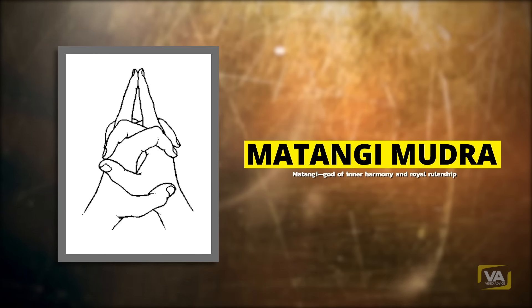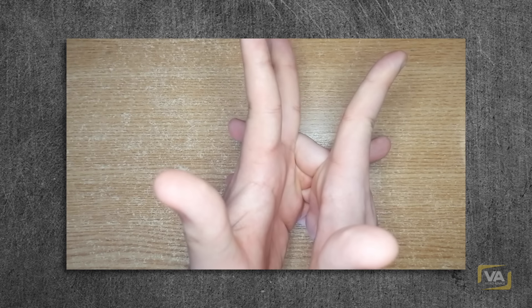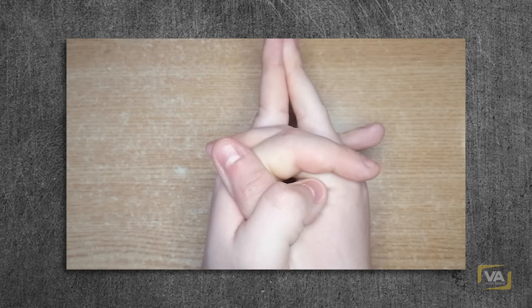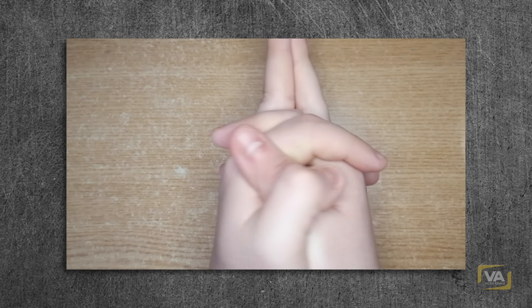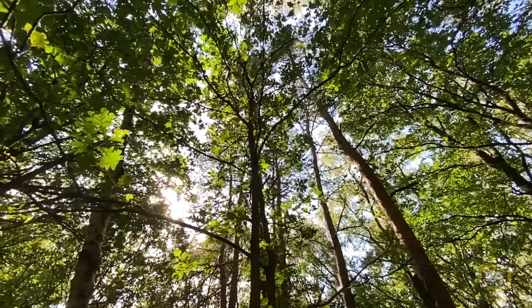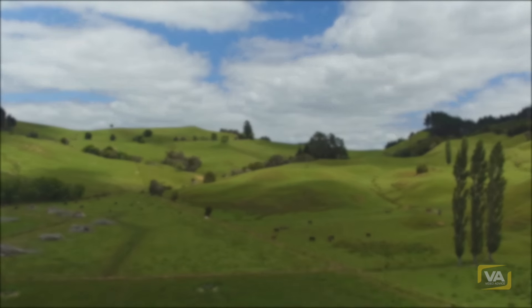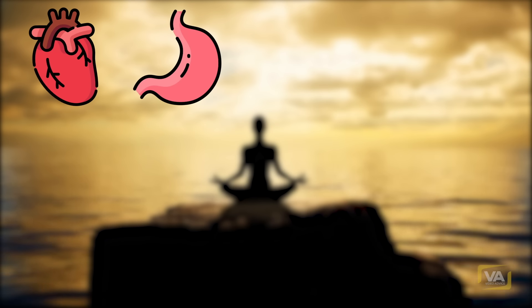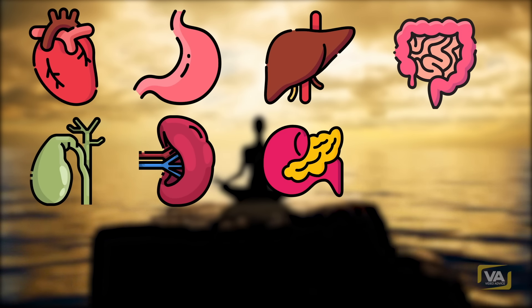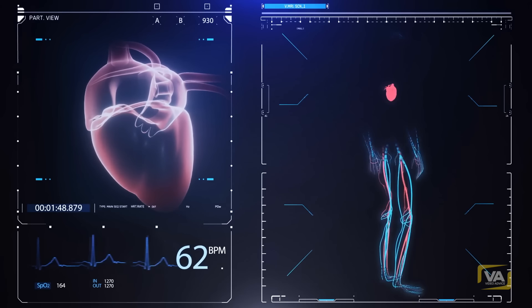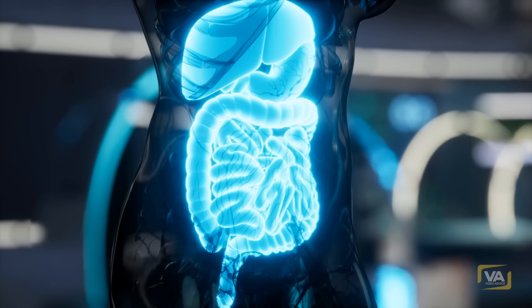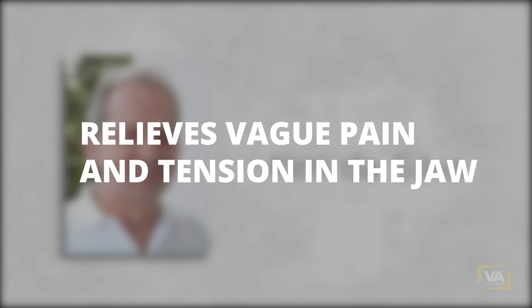Matangi Mudra — Matangi, God of inner harmony and royal rulership: Fold your hands in front of your solar plexus. Point both middle fingers and place them against each other. Direct your attention to the breath in the solar plexus or stomach area. Do as needed, or three times a day for four minutes. This mudra strengthens the breathing impulse in the solar plexus and balances the energies in this area. It stimulates the wood element, representing new beginnings, and the earth element, which gives life its depth. The heart, stomach, liver, duodenum, gallbladder, spleen, pancreas, and kidneys profit from the Matangi mudra. An excited heart becomes noticeably more calm, and inner tension, such as diverse spasms or sensations of fullness that hamper digestion, are resolved. This mudra also relieves vague pain and tension in the jaw.